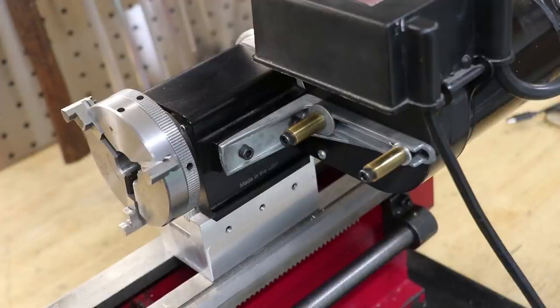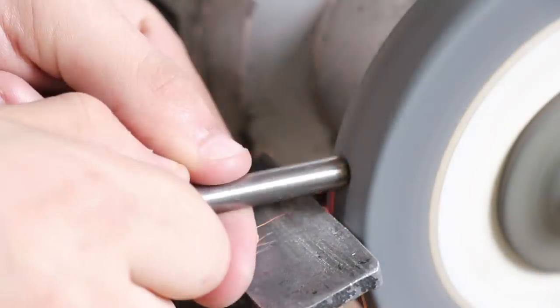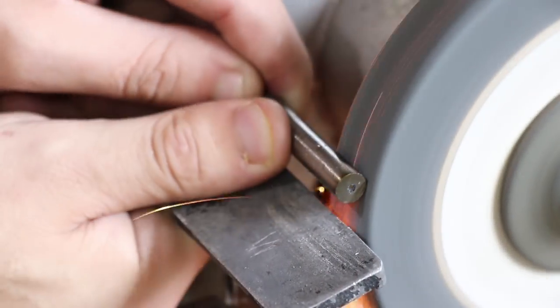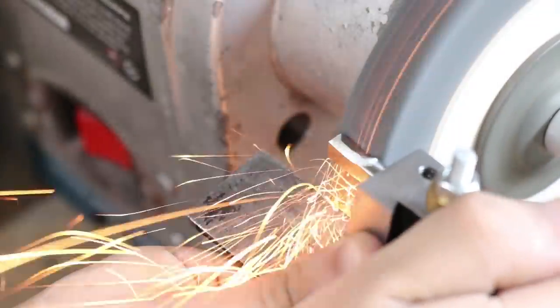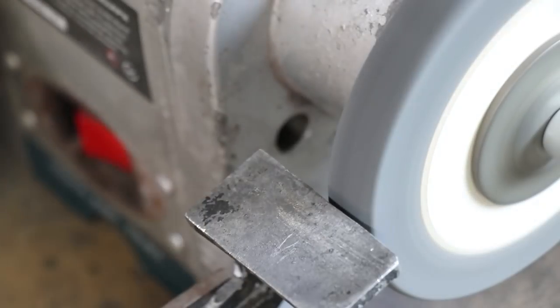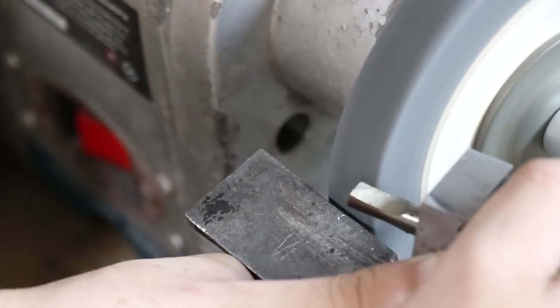I was going to do this on the Sherline lathe, but the 80 millimeter stock was just too big to fit on the lathe. The next thing I did was grind in a trepanning tool from a broken end mill. A trepanning tool is really just a regular parting blade with more clearance in.